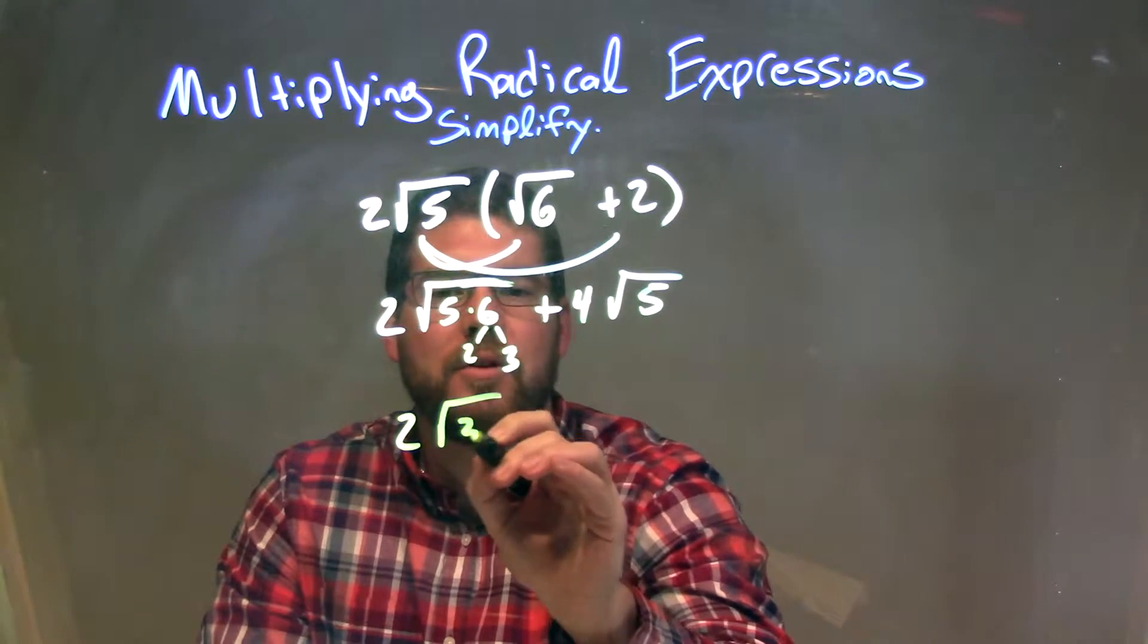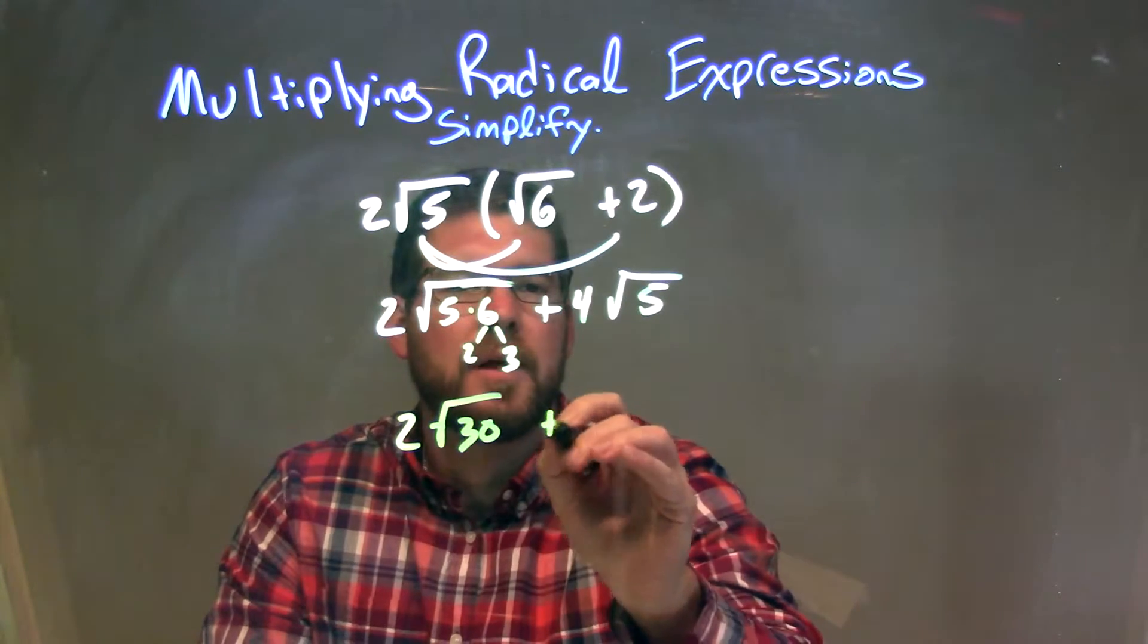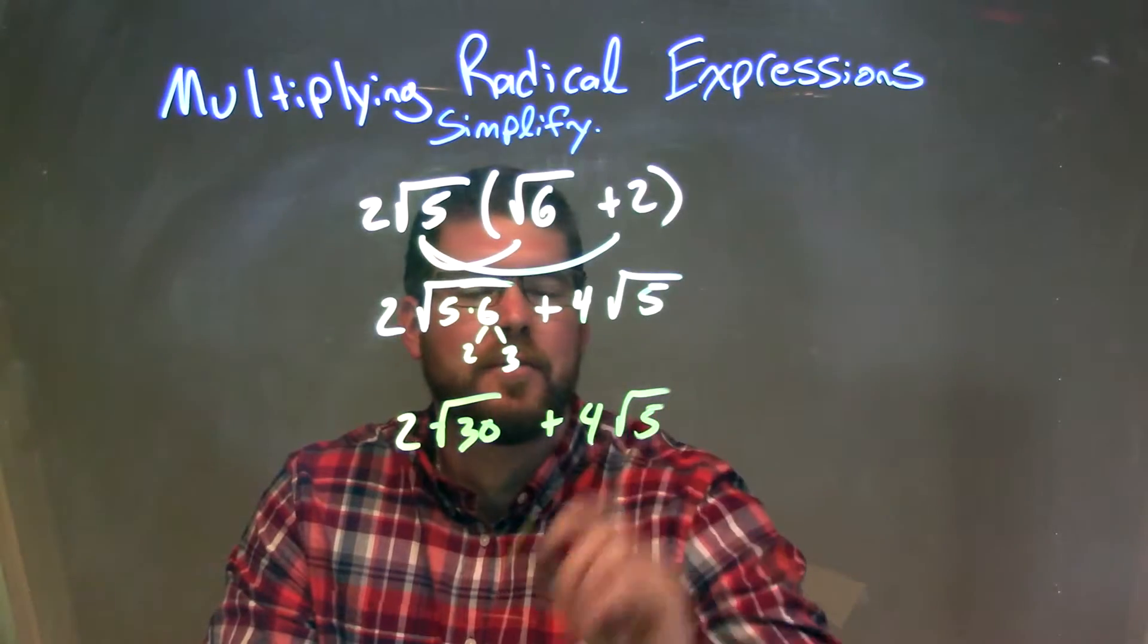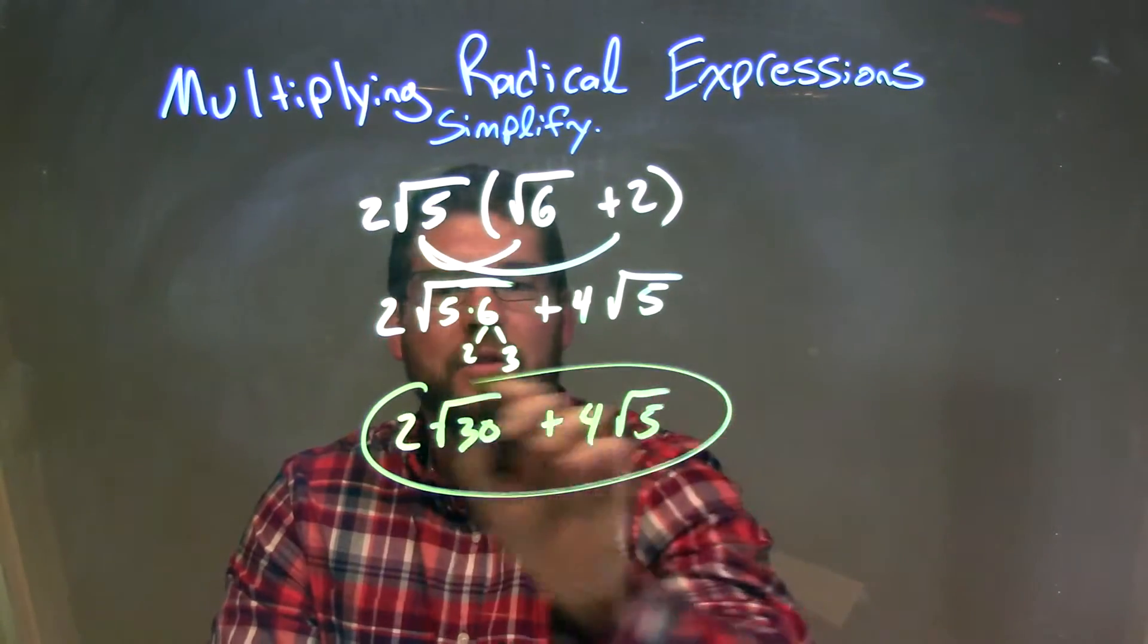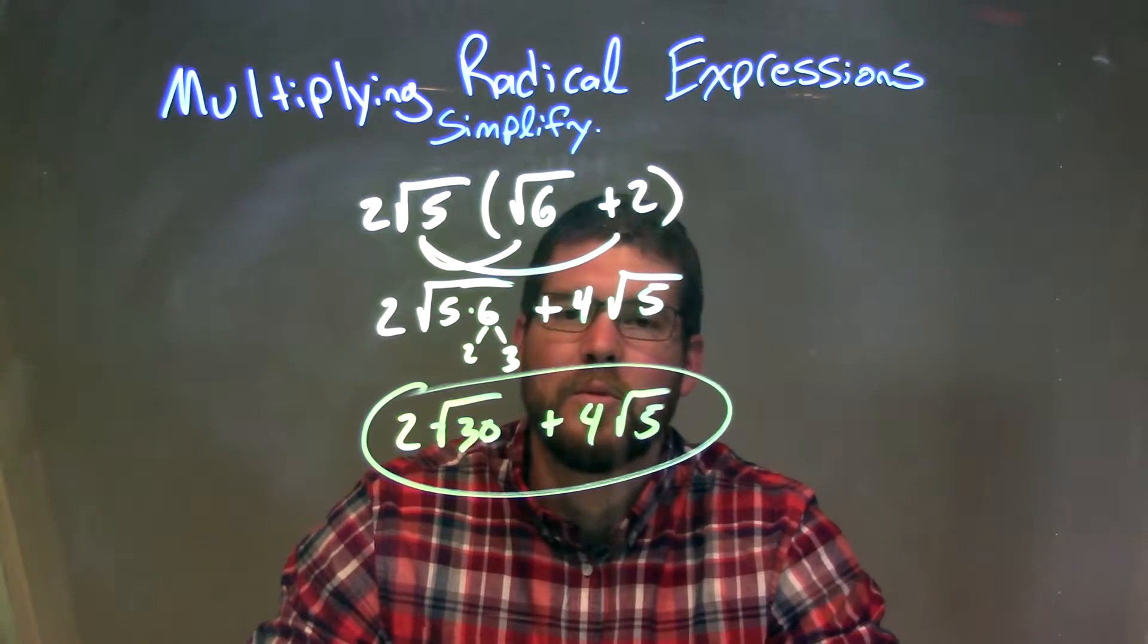So we have 2 times the square root of 30 here, plus 4 times the square root of 5. And so that is just our final answer here of 2 square root of 30, plus 4 times the square root of 5.